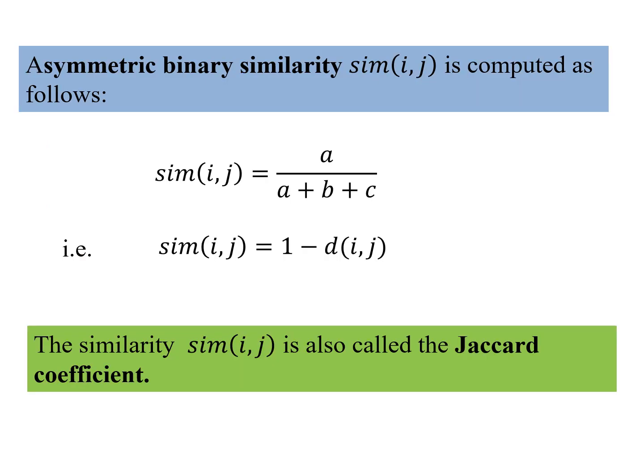Now binary similarity is computed as 1 minus dissimilarity. And for an asymmetric binary variable, sim(i,j) is computed as a by a plus b plus c because we do not include d. So those similarity matches we do not include. So a by a plus b plus c and this similarity is also known as the Jaccard coefficient.